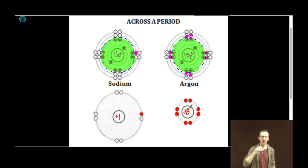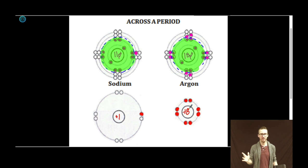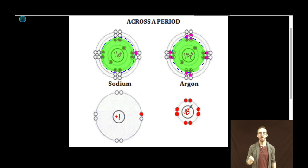Let's compare: core charge of sodium plus one, core charge of argon plus eight. One valence electron in sodium, eight valence electrons in argon. However, because we're in the same period, those electrons are in the same valence level — in this case, the third — for both of them. Comes back to Coulomb's law. Notice argon is a much smaller atom than sodium. Core charge of plus eight does a really good job of attracting and holding those valence electrons. And we are done.